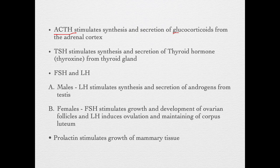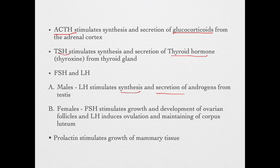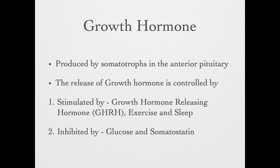All anterior pituitary hormones act on other parts of the endocrine system. ACTH stimulates synthesis and secretion of glucocorticoids from the adrenal cortex. TSH stimulates synthesis and secretion of thyroid hormone from the thyroid gland. In males, LH stimulates synthesis and secretion of androgens from the testis. In females, FSH stimulates growth and development of ovarian follicles, and LH induces ovulation and maintenance of the corpus luteum. Prolactin stimulates growth of mammary tissue.